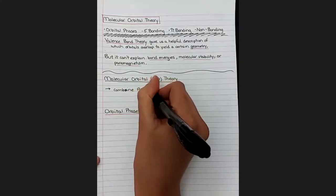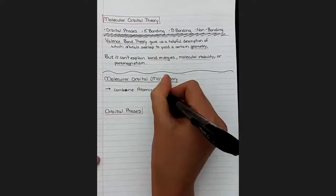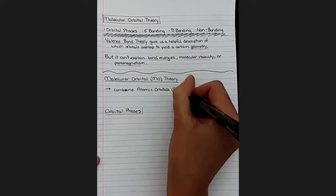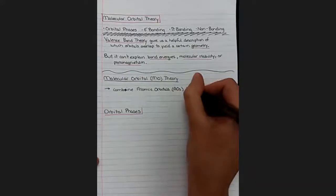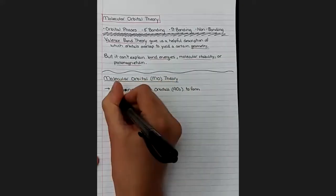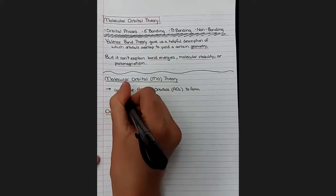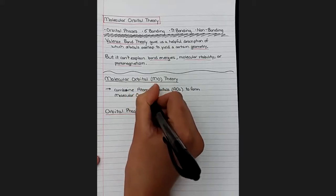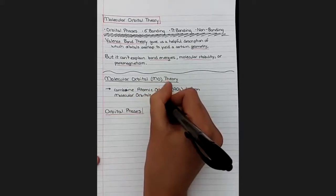And there's going to be a few acronyms, so watch out. We're going to combine atomic orbitals, which we simplify as AOs. And when we combine them, they form molecular orbitals, which we call MOs.